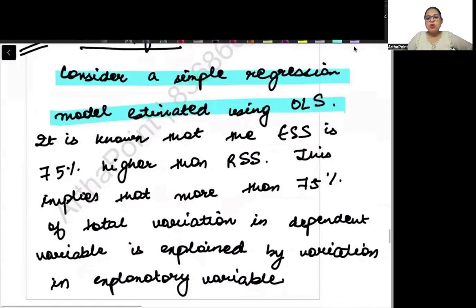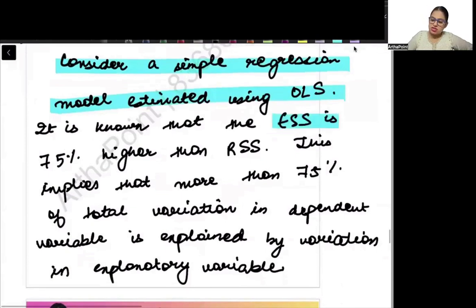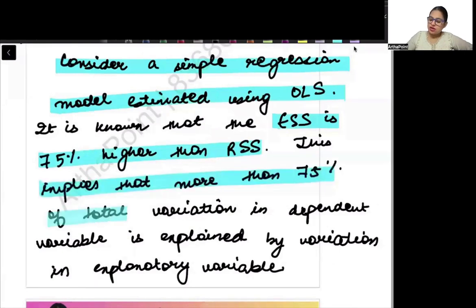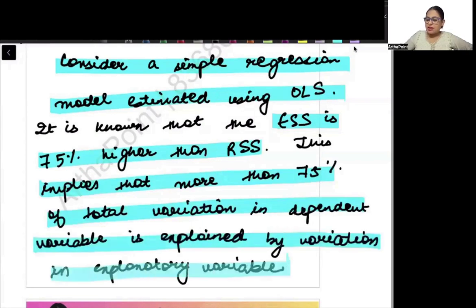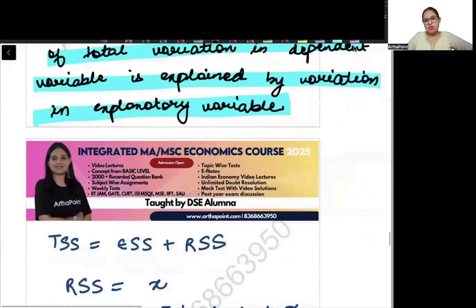It is known that ESS is 75% higher than RSS. This implies that more than 75% of total variation in dependent variable can be explained by variation in the explanatory variable.